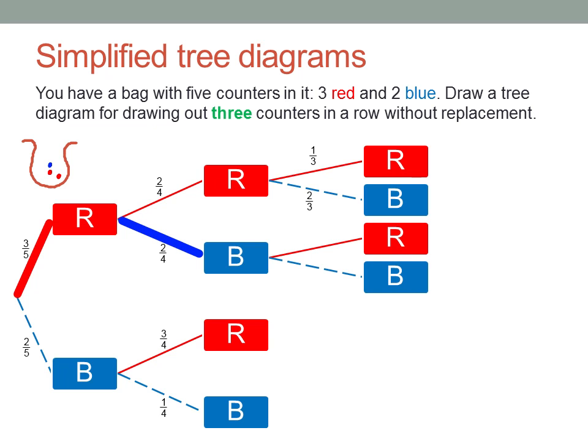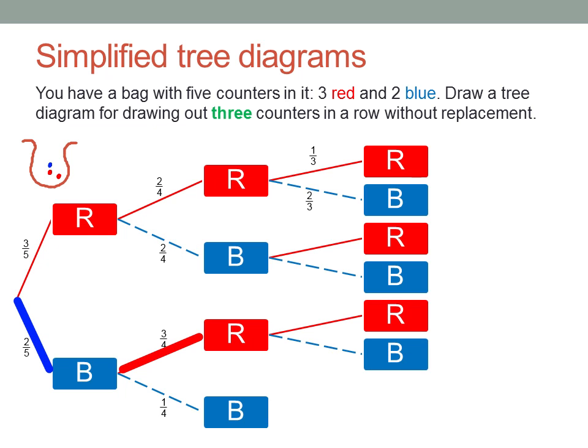If the first was red and the second blue, or the first blue and the second red, then in both of these cases there are three counters left, two red ones and one blue one.